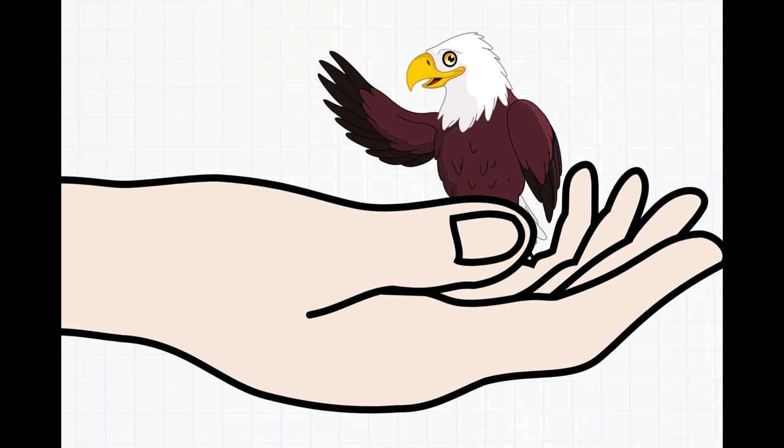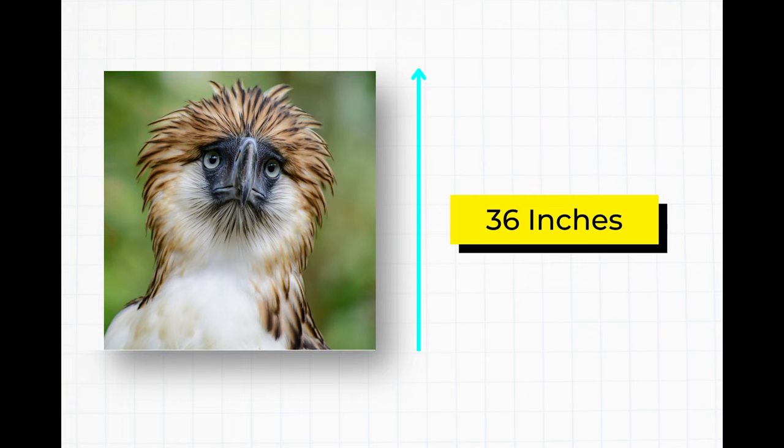However, it would look tiny compared to some of the largest eagles. For example, Philippine eagles can measure up to 36 inches long, while Steller's Sea eagles can weigh nearly 21 pounds.